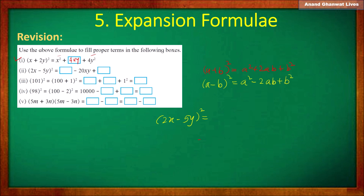So we have: the square of the first term (2x), minus 2 times the first term (2x) times the second term (5y), plus the square of the second term (5y).